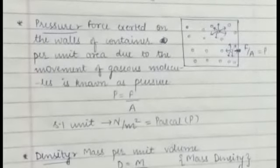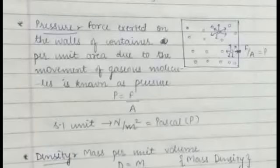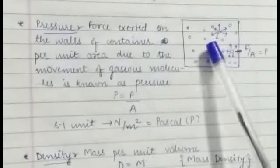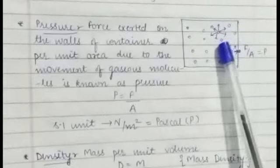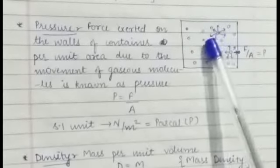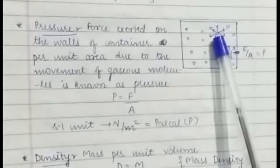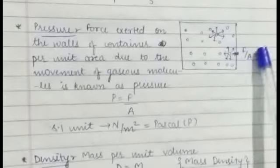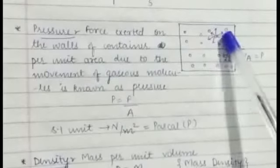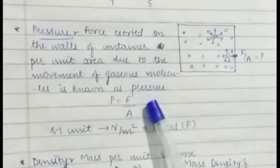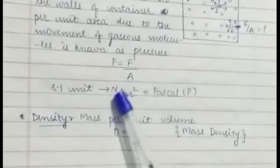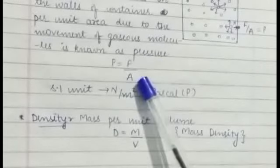Now we come to the fourth measurable property of a gas which is pressure. This is a container, the molecules of gas will be in motion. As they move, these particles or molecules exert force on the walls of the container. This force per unit area on the container due to the movement of gaseous molecules is called pressure. So the formula of pressure is force upon area. The unit is newton per meter square because force unit is newton and area unit is meter square.